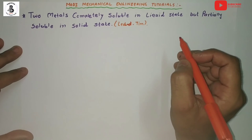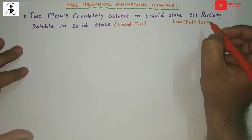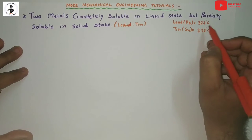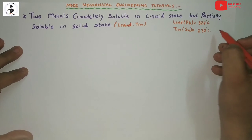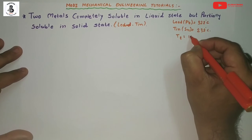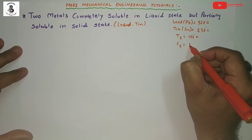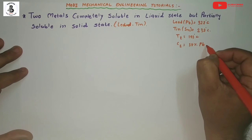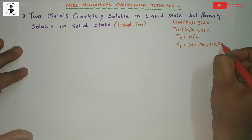Lead has a melting point around 327 degrees Celsius and tin has a melting point around 232 degrees Celsius. The eutectic temperature is around 183 degrees Celsius and the eutectic composition is around 38% lead (Pb) and 62% tin (Sn).